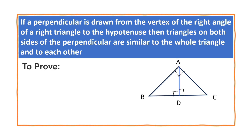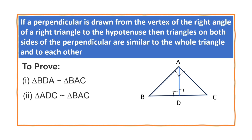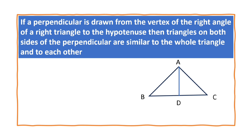To prove, there are three items to prove. The first one is triangle BDA is similar to triangle BAC, meaning the original triangle. The second one is triangle ADC is similar to triangle BAC. The third one is triangle BDA is similar to triangle ADC.